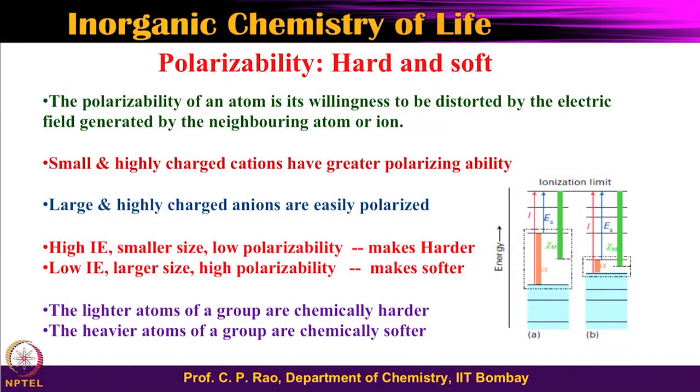An atom has a nucleus and an electronic cloud. If the electronic cloud is distorted a lot, the size of the ion increases and it becomes chemically softer. On the other hand, if you have a smaller size and smaller electron cloud, the nucleus captures the electrons strongly, and such a species tends to be chemically hard. What is important here is polarizability and polarization.